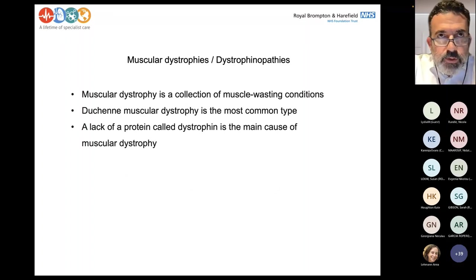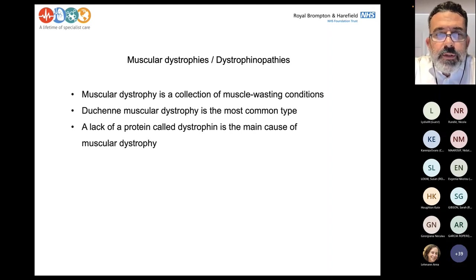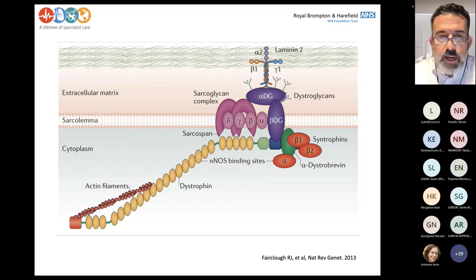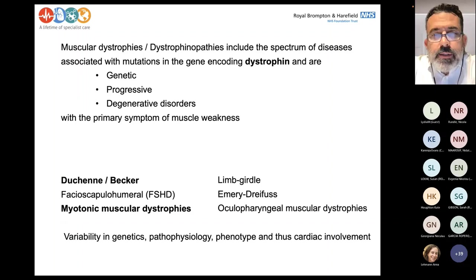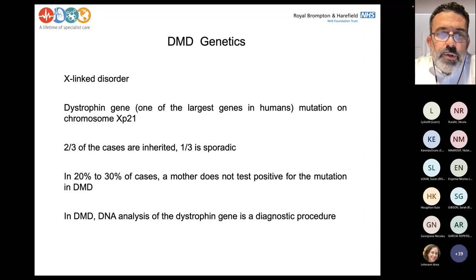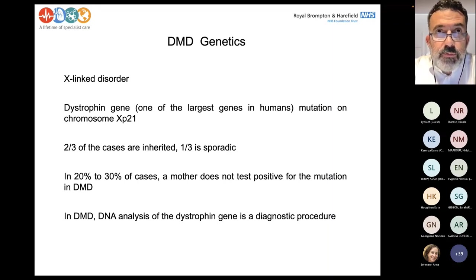I have grouped them into three different categories. Let's start with the dystrophinopathies. Muscular dystrophy is not one single disease — it's a collection of diseases. The most well-known typical one is Duchenne muscular dystrophy because it's the commonest. It's caused by the lack of a protein called dystrophin, which is a very important, very large protein in the cell — you can see it here in yellow. It's a genetic condition, progressive and degenerative. It's X-linked, so we expect males to be affected, though we'll discuss females later — and they are affected in a number of cases, which we should never miss.